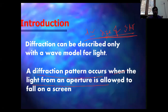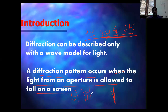A diffraction pattern occurs when light from an aperture falls on a screen. There is a source on one side, an aperture in between, and a screen on the other side. Whatever light comes from the source falls on the slit first, and you can see dark and bright fringes on the screen.